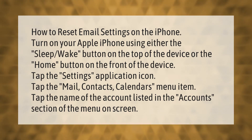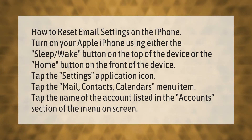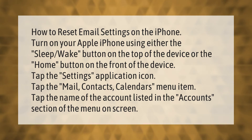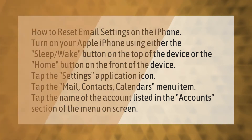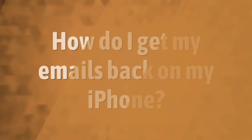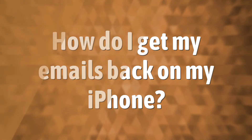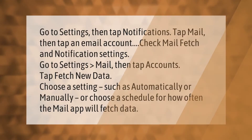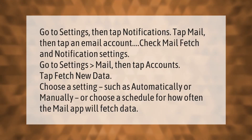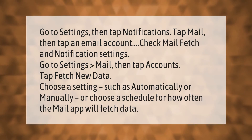Tap the Mail, Contacts, Calendars menu item. Tap the name of the account listed in the Accounts section of the menu on screen. Go to Settings, then tap Notifications, tap Mail, then tap an email account.